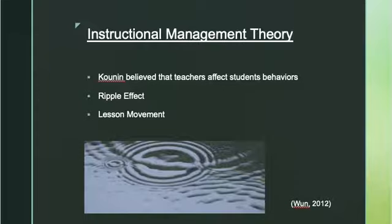Kounin's instructional management theory included the belief that teachers affect students' behaviors positively and negatively. Being an effective classroom manager means having clear transitions between activities, knowing what is going on in the classroom at all times, and continually maintaining instructional momentum.